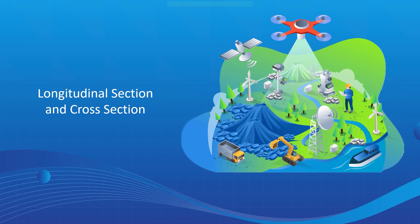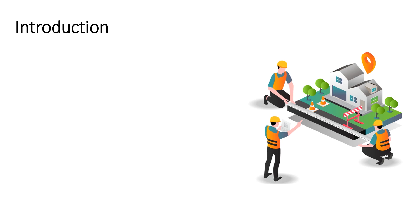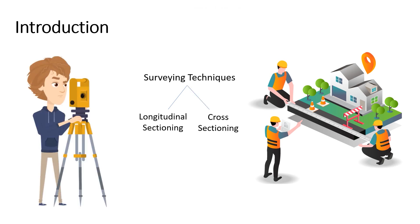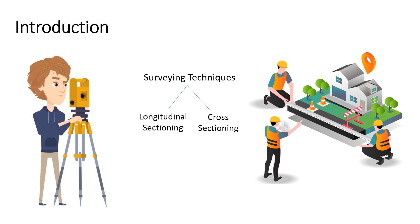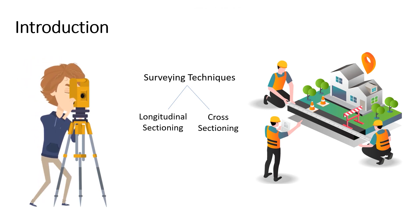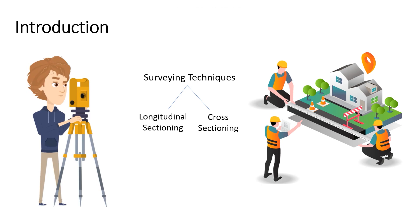Hello, survey attendees. In this video, we will explore the concepts of longitudinal and cross-sectioning and the benefits they offer in surveying. Surveying is a crucial aspect of civil engineering and construction projects, providing accurate measurements and data for planning, design, and implementation. Two important techniques used in surveying are longitudinal and cross-sectioning, which allow surveyors to gather detailed information about the terrain, enabling engineers to make informed decisions during the construction process.